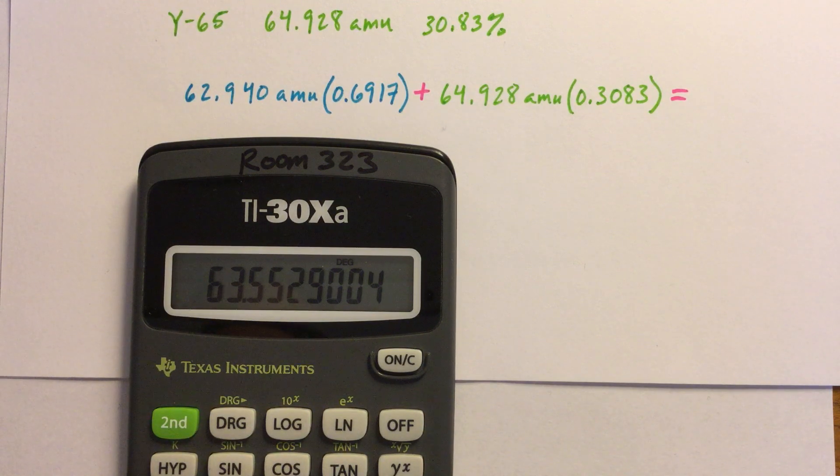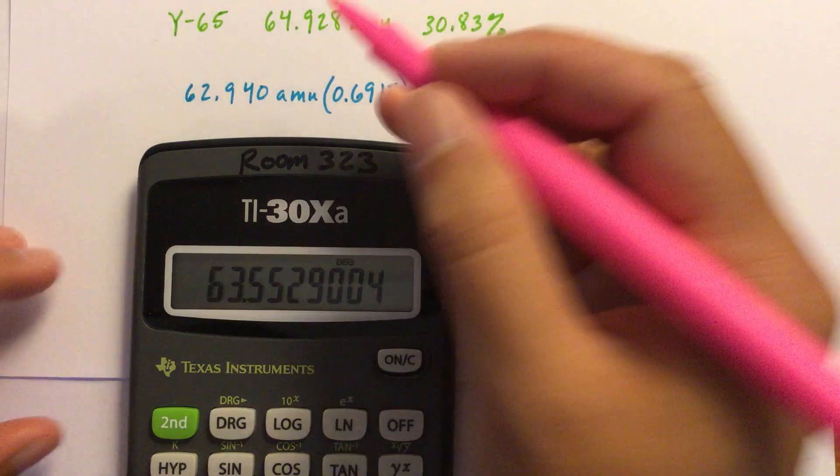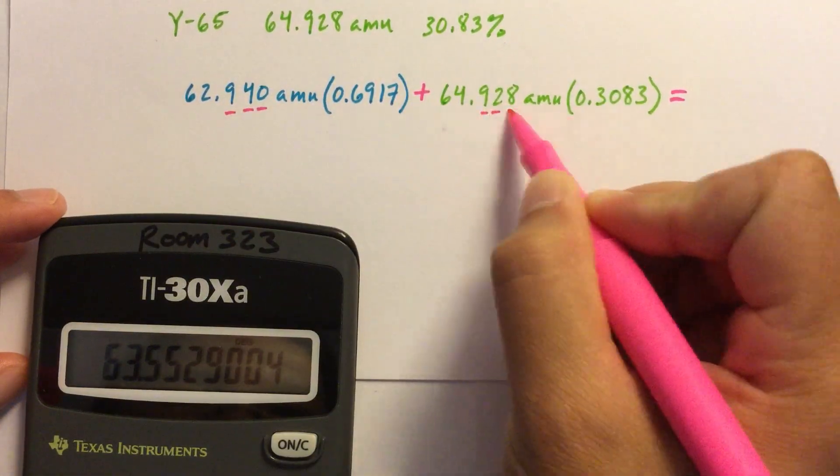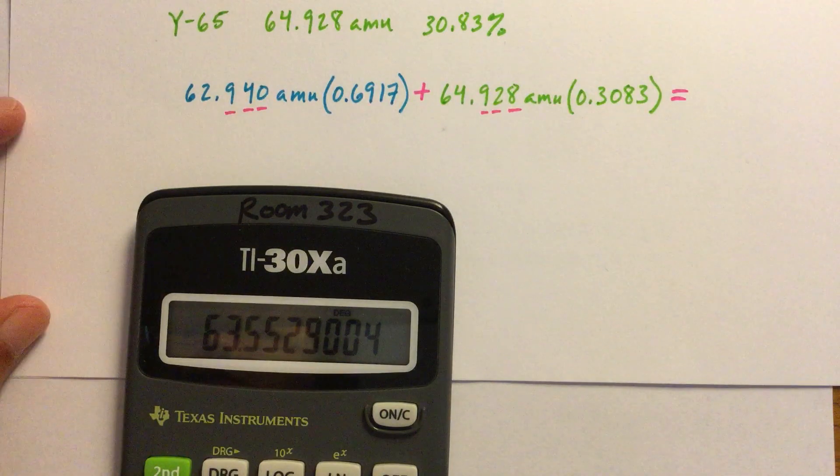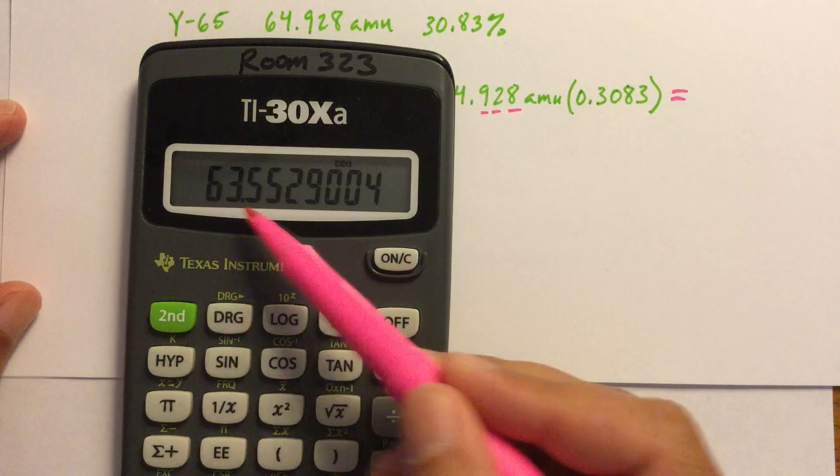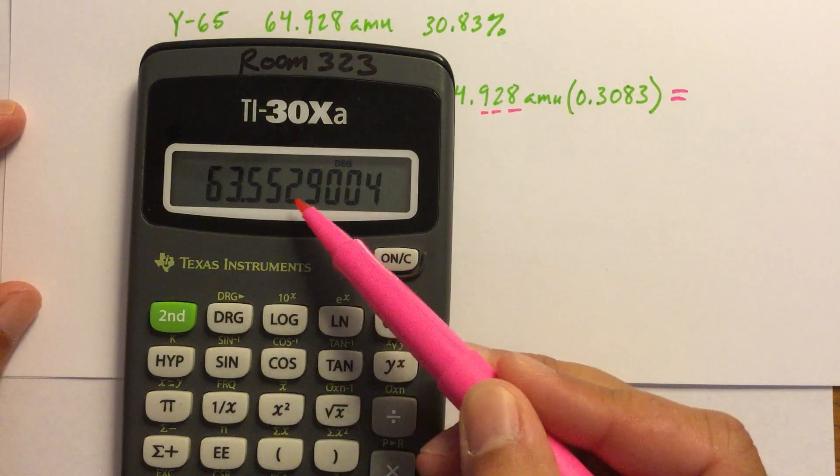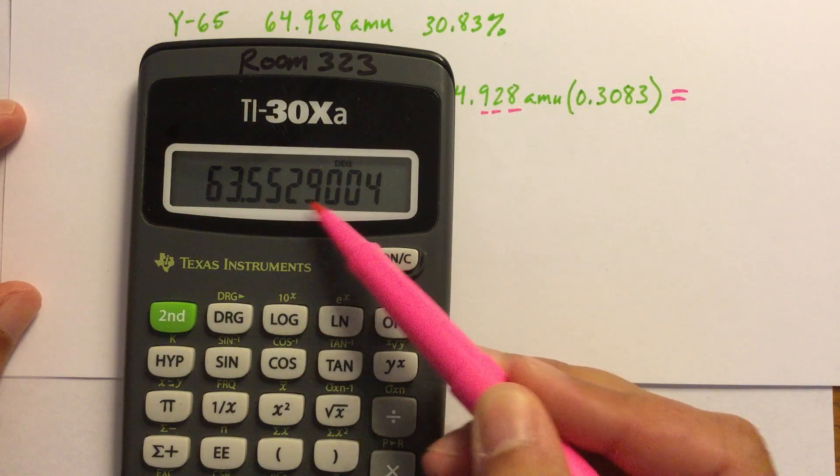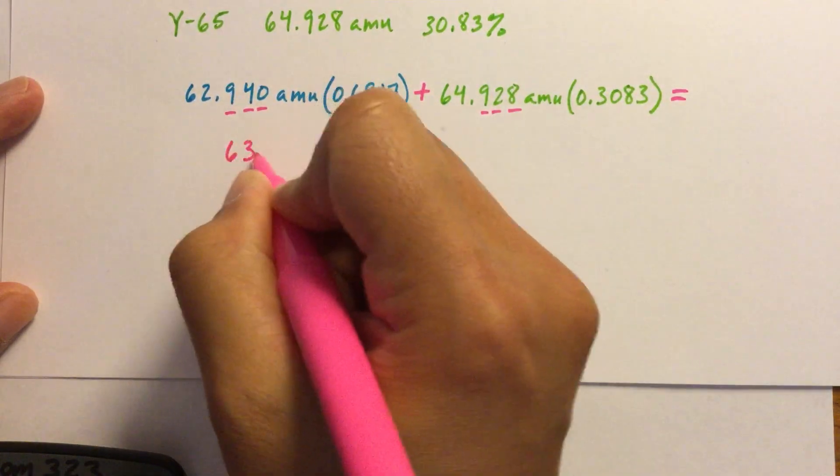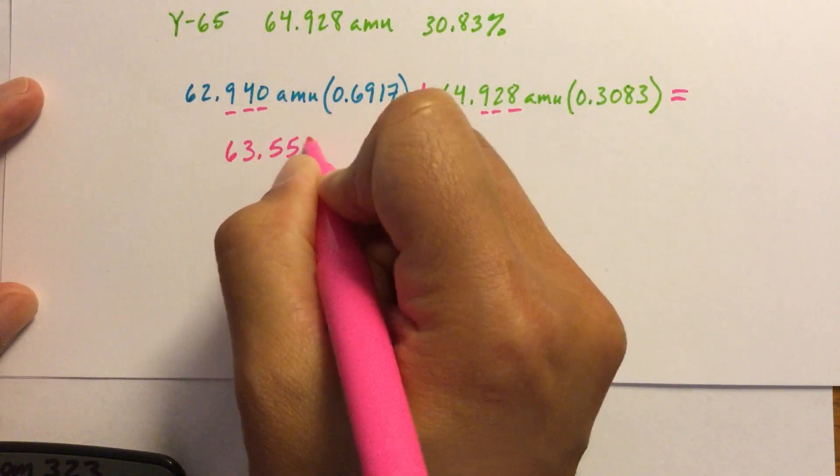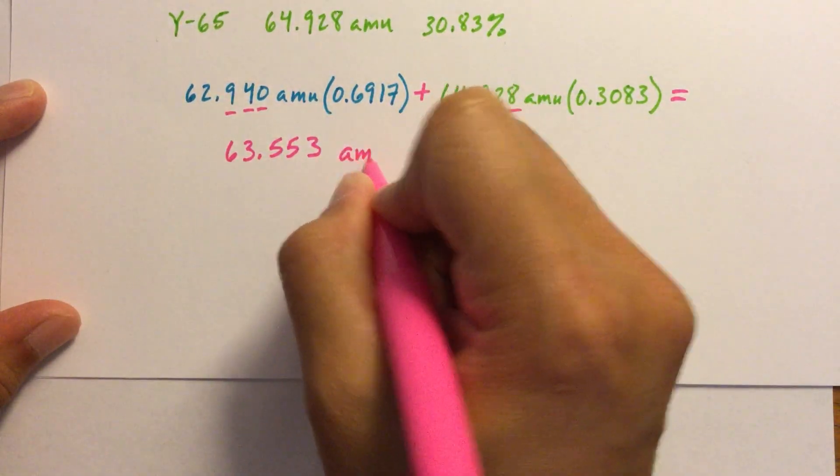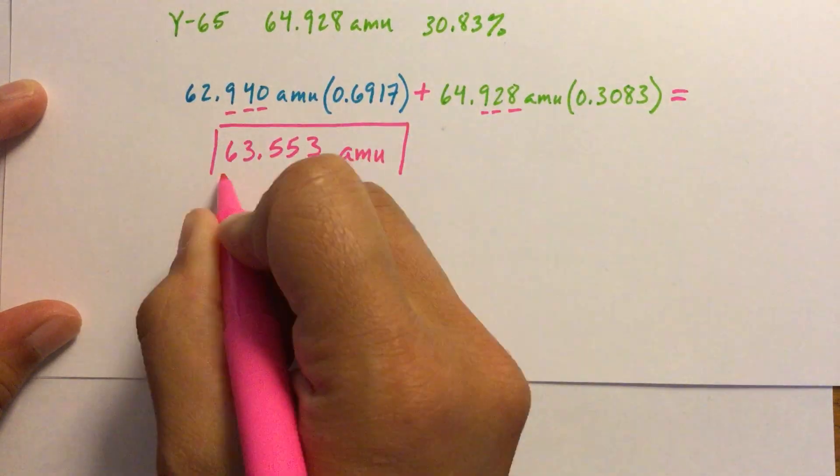And for the numbers that we should write down, since both of these masses go to three decimal places, again we'll talk about this later in the year, but we want our answer to go to three decimal places, so we're going to do 63.553, this will get rounded up because it's followed by 9. And we always have to have units, so in this case, amu.